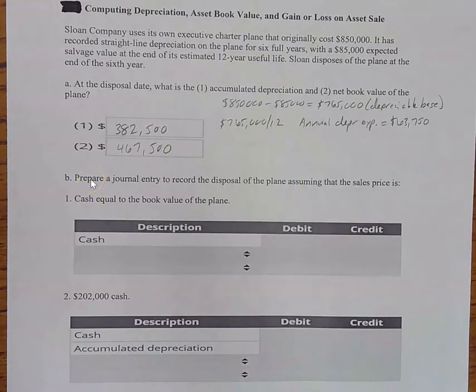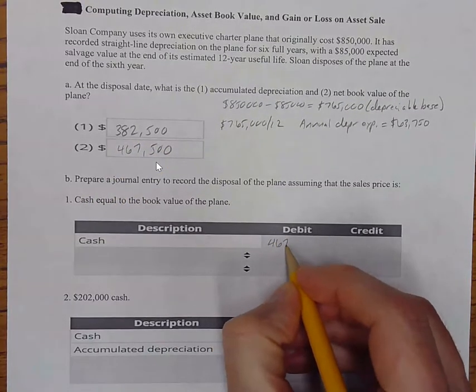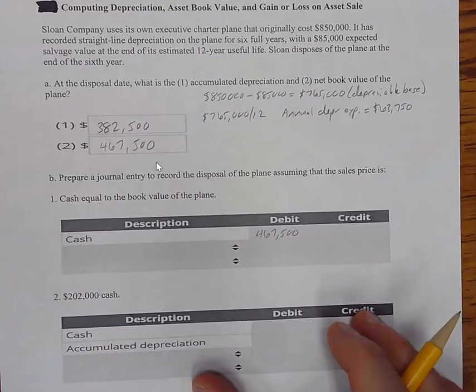And then it says for part B, they say prepare a journal entry to record the disposal. See, up here they called it sale, and now they're calling it disposal. So they're trying to work in some vocabulary here, words that mean the same thing. Build your vocabulary. Record the disposal of the plane assuming that the sales price is, well, number one, cash equal to the book value of the plane. Okay, so in this case, we're not going to have a gain or loss. So if we are disposing it for book value, that means we got cash equal to book value of $467,500.